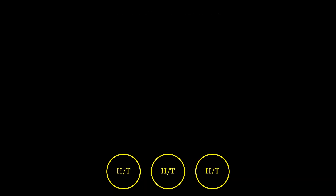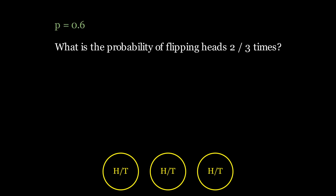Now suppose that we flip the same coin three times. Also suppose that the coin is weighted, and so the probability of getting heads is 0.6. We might be interested in the probability of flipping heads two out of three times.